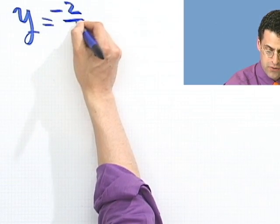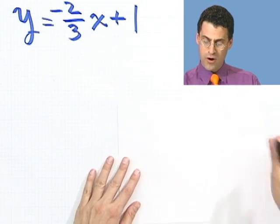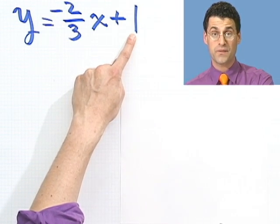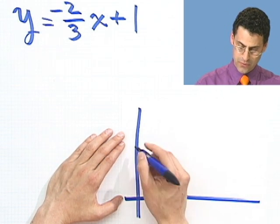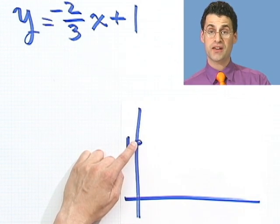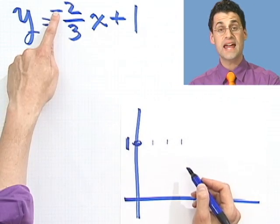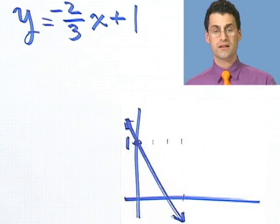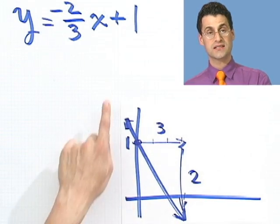This also goes the other way. Suppose someone tells us y equals minus 2 over 3 times x plus 1 and asks us to graph it. The y-intercept is 1, so (0, 1) is a point on the line. The slope is minus 2 thirds. Starting at the y-intercept of 1, I go 3 units over in the x direction and negative 2 in the y — down 2. It's negatively sloped because that's negative.